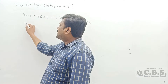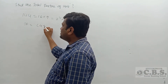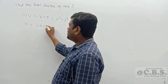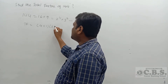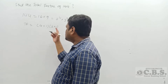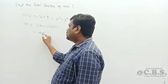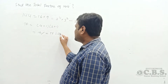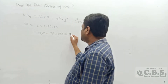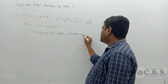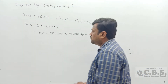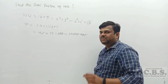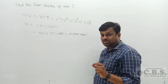So there are totally 15 factors of 144. If total factors is odd, the given number is a perfect square number. All perfect square numbers have an odd number of total factors, but the powers of their primes are even numbers.